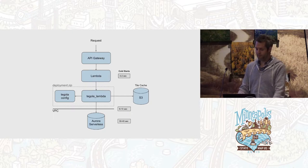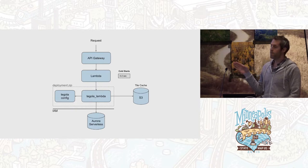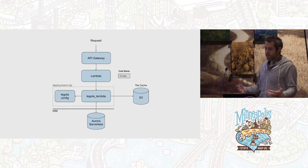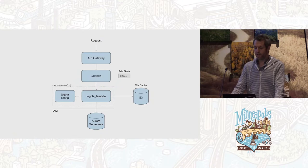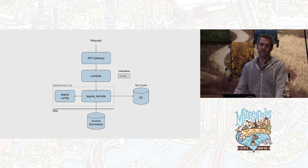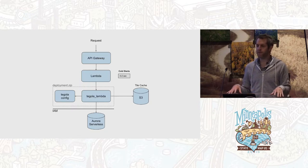You can make changes to the architecture to eliminate those cold starts. If you remove the VPC and use IAM roles, you can restrict access to the Aurora serverless database that way — I haven't tried it yet but that's what Amazon recommends. To get rid of the 30 to 40 second Aurora cold start, don't scale it to zero — keep it at the minimum Aurora Compute Units setting, which runs around $100 a month but eliminates that cold start latency.